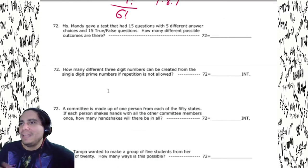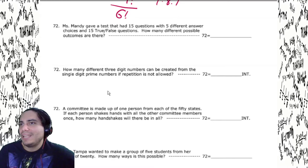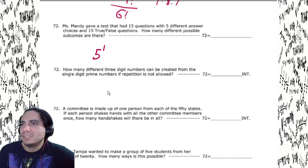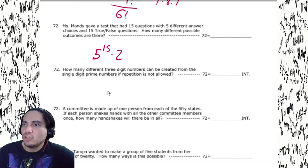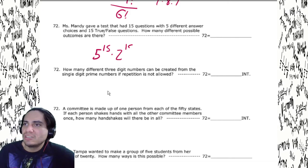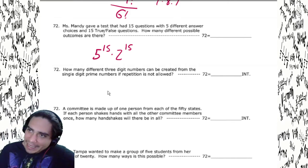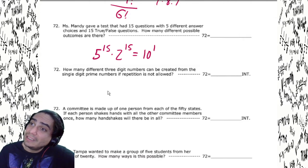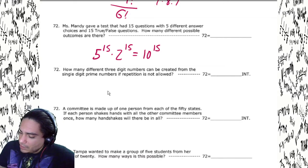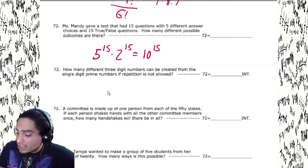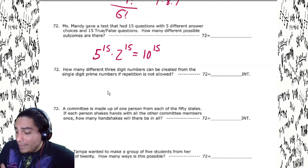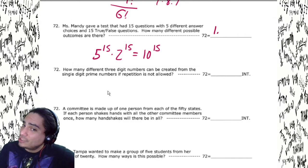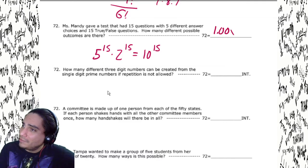Miss Mandy gave a test with 15 multiple choice questions with five different answer choices, and 15 true or false questions. So we've got 5¹⁵ multiplied by 2¹⁵. And if you can see it, this is really just 10 to the 15th power — that's a lot of zeros, and the answer should look pretty familiar when you see that base of 10.